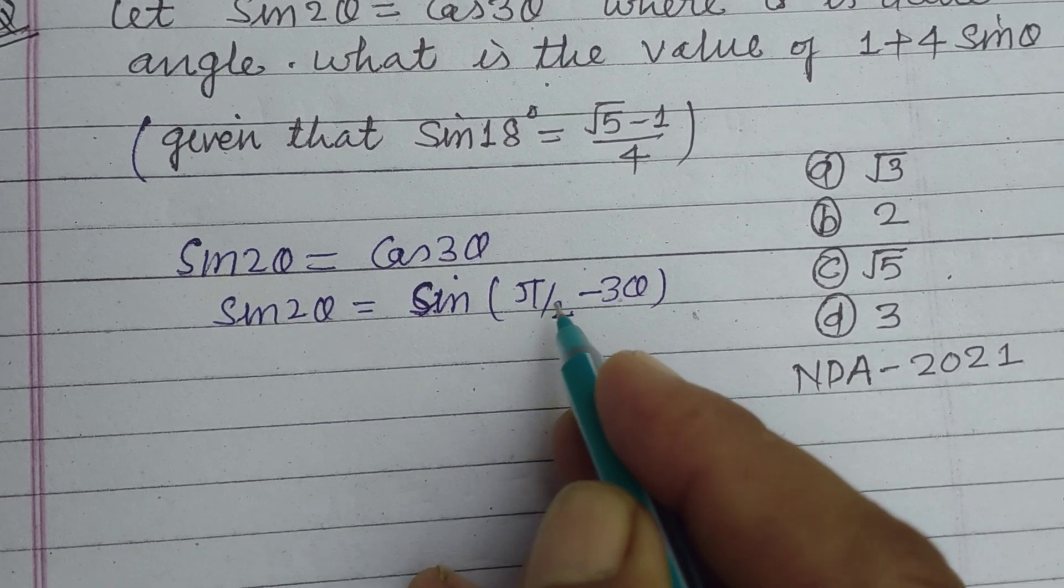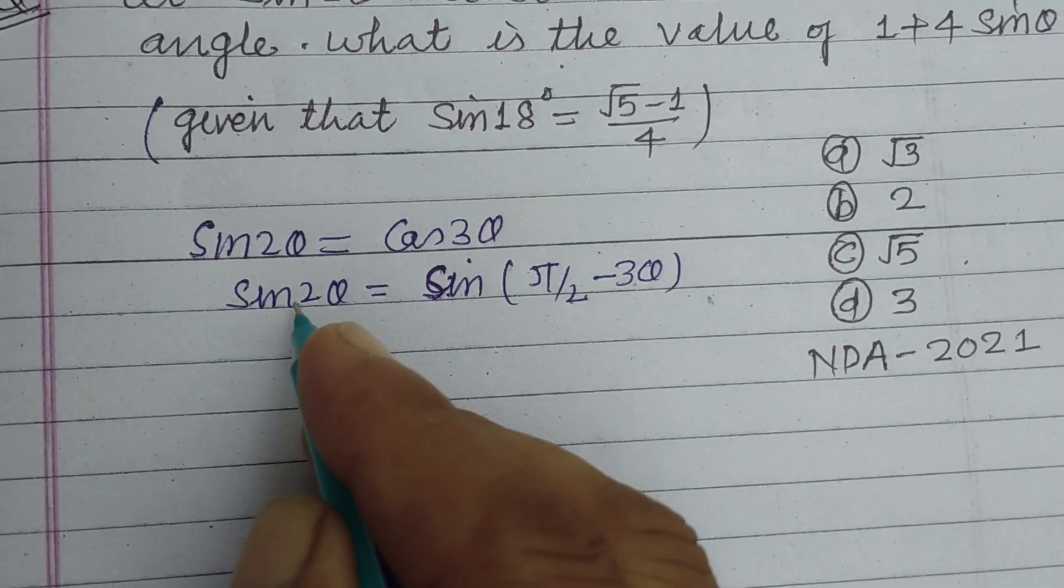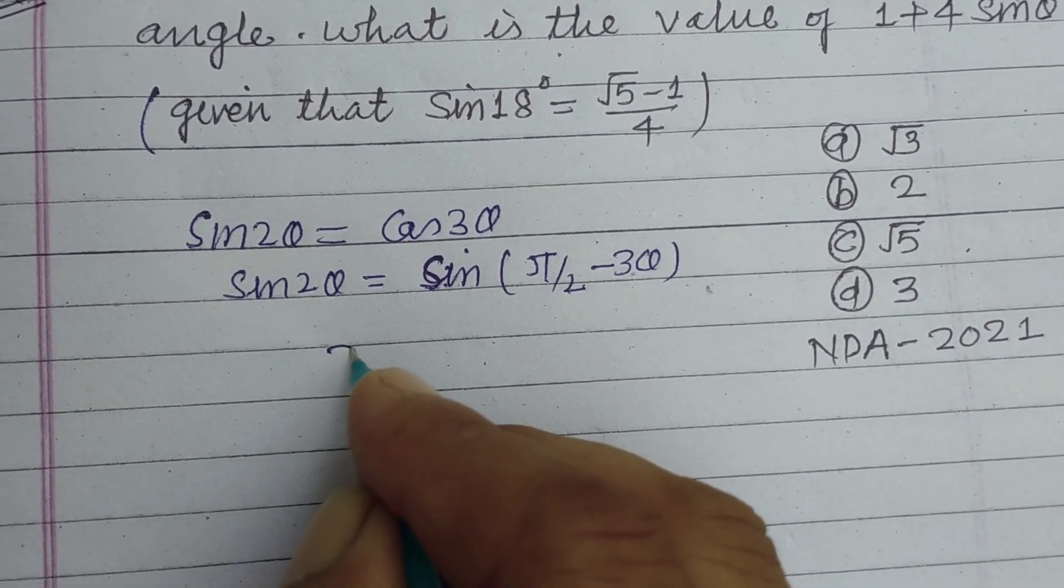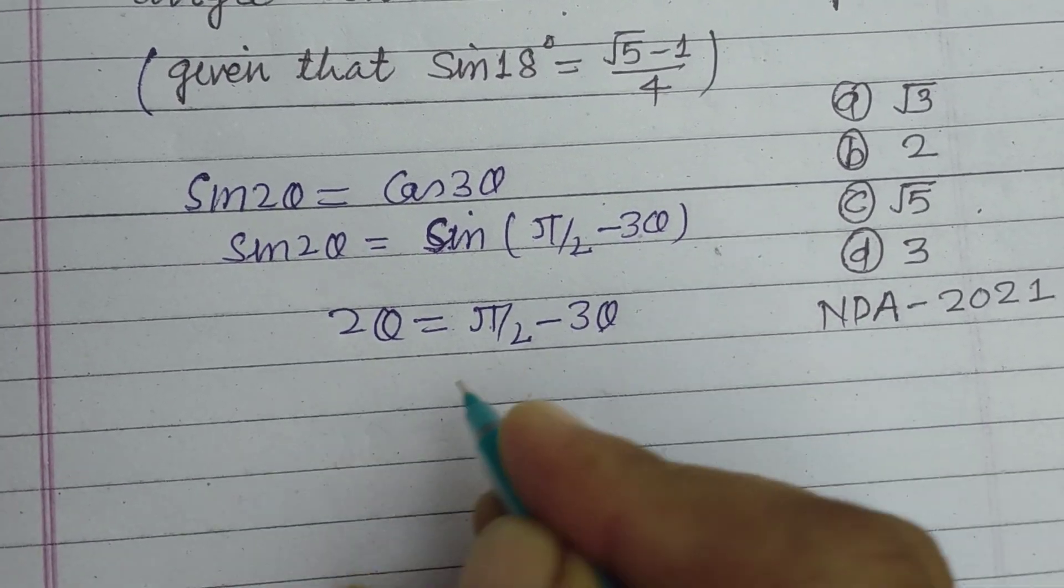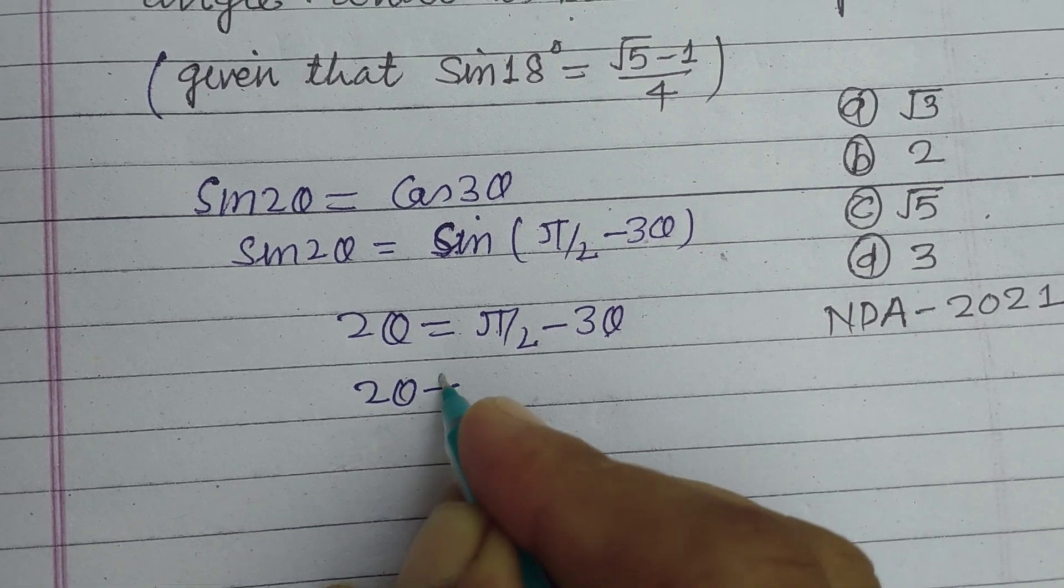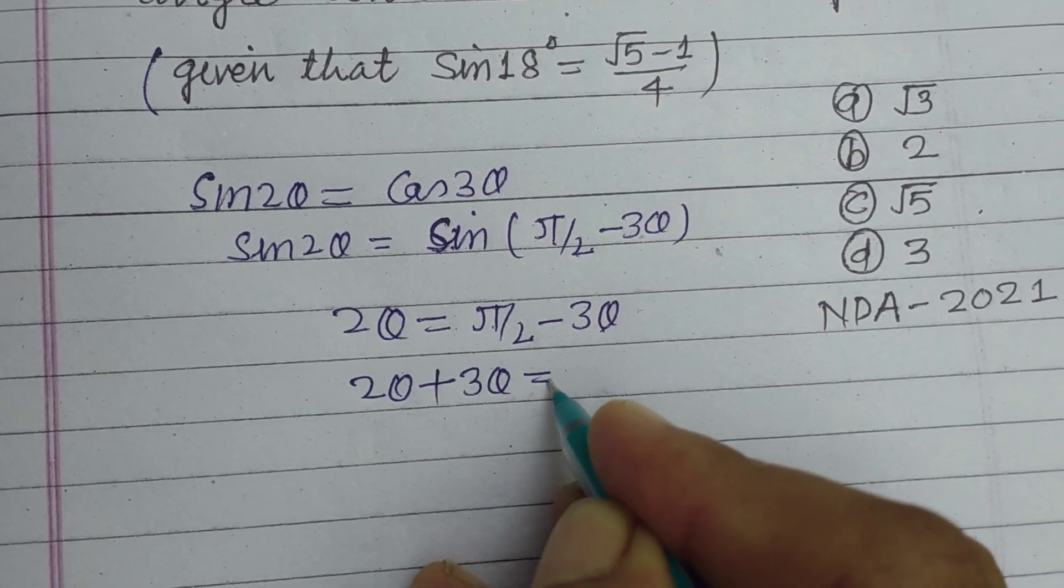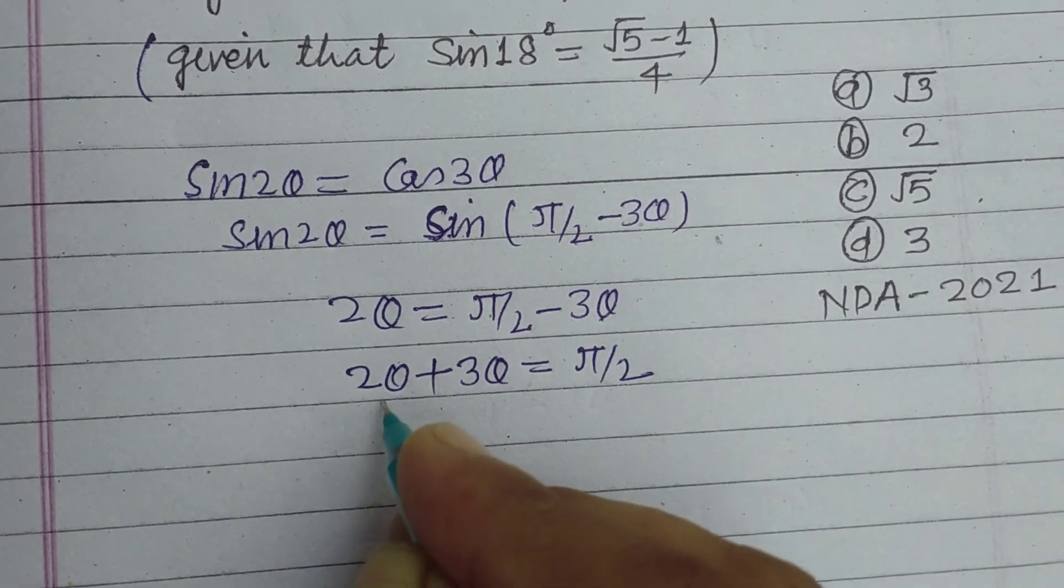Now comparing the angles, so 2θ equals pi by 2 minus 3θ. We bring 3θ towards 2θ, so it becomes positive. So 2θ plus 3θ, this is 5θ, equals pi by 2.